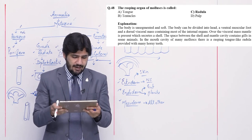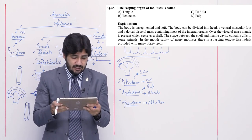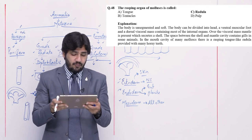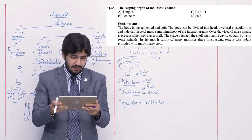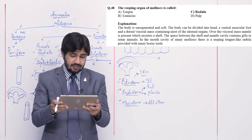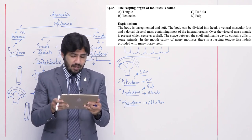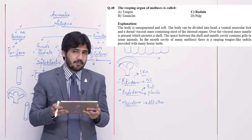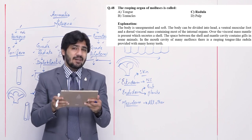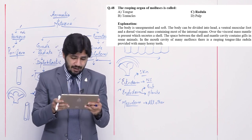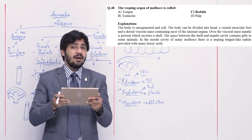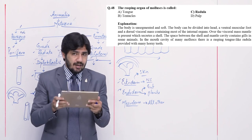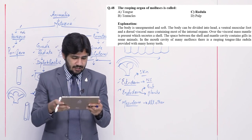Question number 48: the rasping organ of mollusca is called — alpha tongue, beta tentacles, charlie radula, and delta palp. The rasping organ within mollusca is called radula. Right option is charlie.